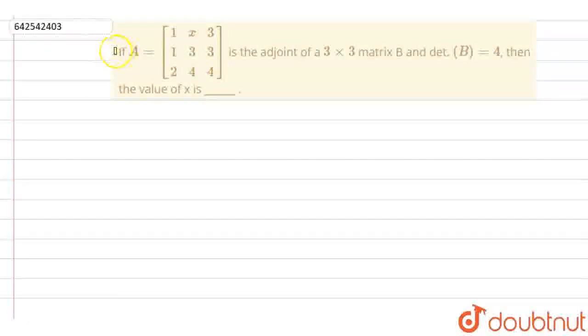Hello everyone, so the question is, if A is equal to this matrix is the adjoint of a 3 cross 3 matrix B and det of B is equal to 4,